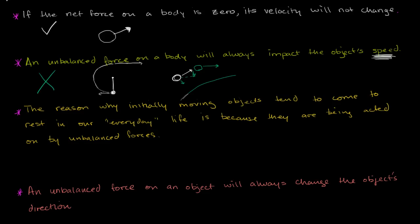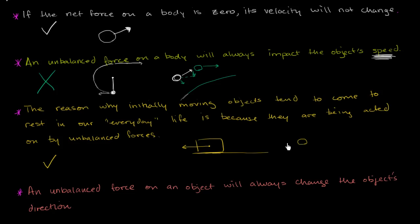Statement three: the reason why initially moving objects tend to come to rest in our everyday life is because they are being acted on by unbalanced forces. This is absolutely true. If I take a book and try to slide it across a desk, it eventually comes to a stop because of the unbalanced force of friction — the grinding of the book's surface against the table. Inside a pool, if you push an object through water, it comes to a stop because the water provides an unbalanced force opposite to its motion. In everyday life, we don't see objects go on forever because of friction, air resistance, and friction with actual surfaces.